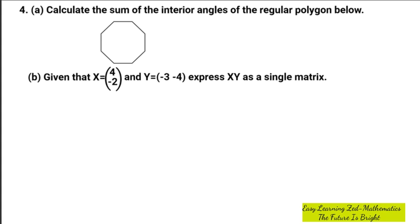We are told to find the sum of interior angles of this regular polygon. The formula we use to find the sum of interior angles is (n-2) multiplied by 180 degrees. We're going to count the number of sides because n stands for the number of sides.